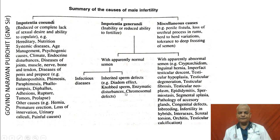Impotentia genandi has been classified into two types: that with apparently normal semen and that with apparently abnormal semen. Those with apparently normal semen are classified into that because of infectious diseases and non-infectious sperm defects. Pathologies of the testes, epididymis, and accessory sex glands are covered under impotentia genandi with apparently abnormal semen.